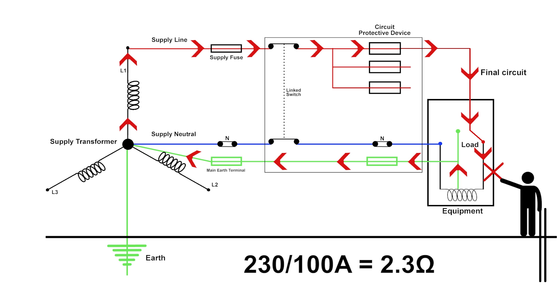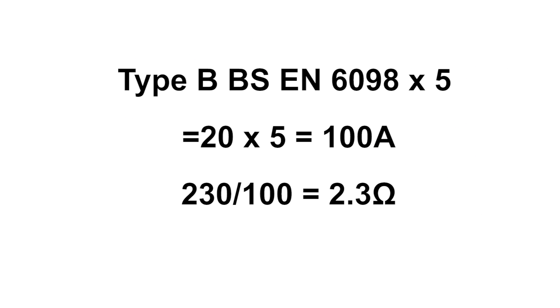We need to make sure that our earth loop path for this particular device, when our cable is operating at 70 degrees, is 2.3 ohms maximum. As I said, any type B protective device has to operate within 0.1 of a second at a maximum of five times its rating. We're using a 20 amp device, so if we multiply that by five, it means that when 100 amps flows through it, it must operate within 0.1 of a second. Clearly, for 100 amps to flow, if I just use Ohm's law—230, which is my voltage, divided by 100—tells me that I've got a value of resistance of a maximum of 2.3.